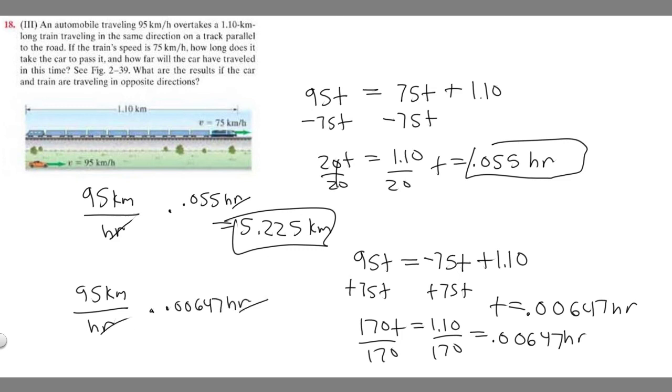So 95 kilometers per hour times 0.00647 hours. 95 times 0.00647 gives you 0.61465. I'm going to round to 0.615, and keep in mind it's in kilometers.